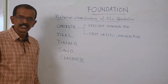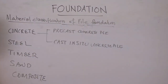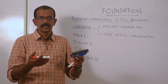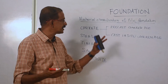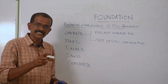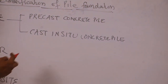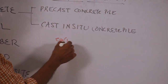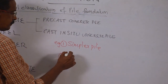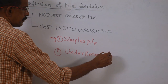Now we discuss the material classification of pile foundation: concrete, steel, timber, sand, and composite. Concrete is divided into precast concrete pile and cast in-situ concrete pile. Precast means it is already made well before the requirement starts. Cast in-situ means construction happens in the site itself. There are many types of cast in-situ piles; we will discuss two typical examples: simplex pile and under reamed pile.